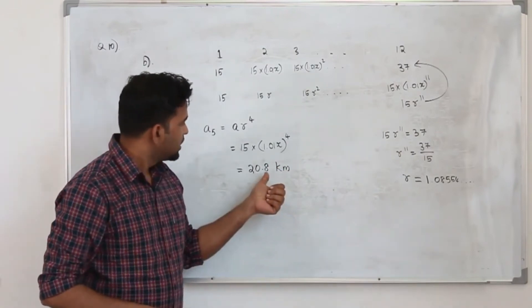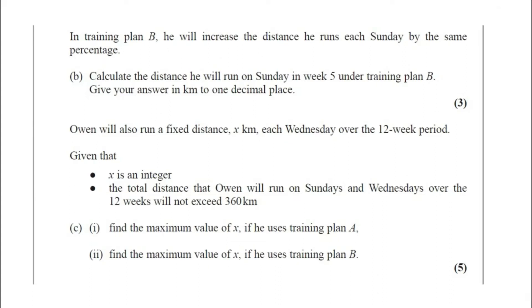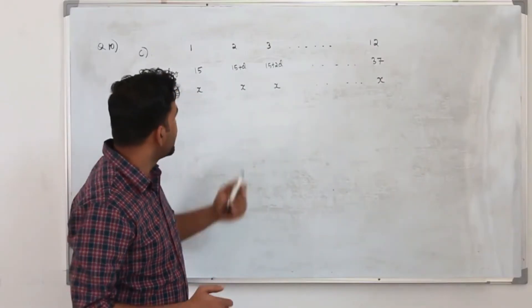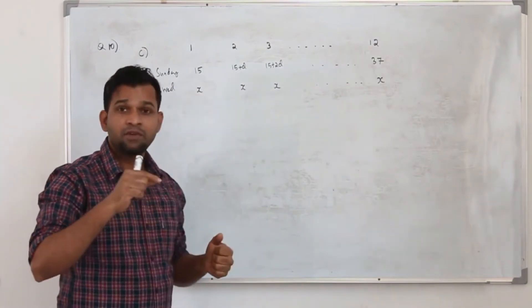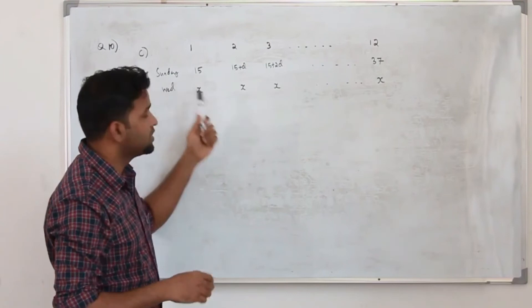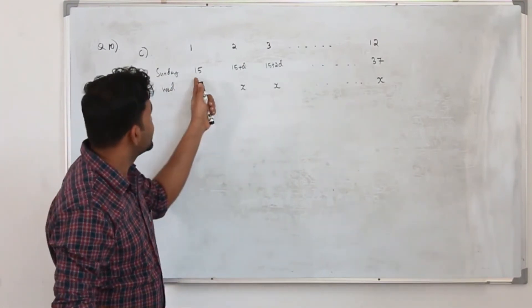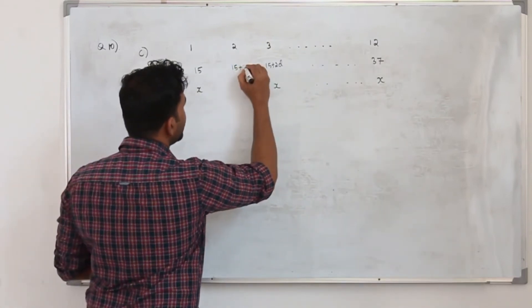Owen will also run a fixed distance x km each Wednesday over the 12-week period. Given that x is an integer, the total distance run on Sundays and Wednesdays over 12 weeks must not exceed 360 km. There are two sub-questions: find the maximum value of x under training plan A, and under training plan B. The question carries 5 marks. Under plan A, on Sundays he follows the arithmetic sequence with D equals 2.